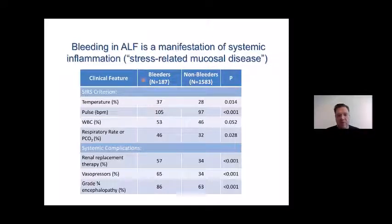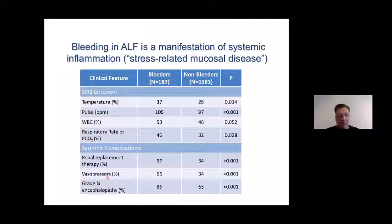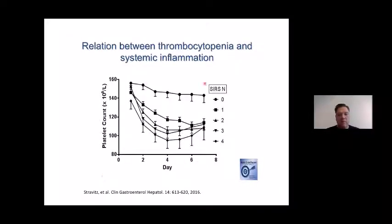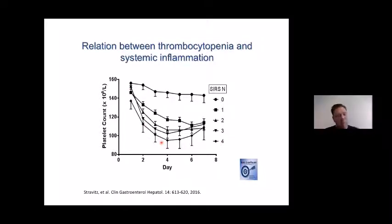These types of bleeds have been coined in the literature as stress-related mucosal disease. Indeed, comparing bleeders versus non-bleeders in the study of more than 1,700 patients, the bleeders have much more positive criteria of systemic inflammation — much more positive SIRS criteria and systemic complications, including renal replacement therapy, severe encephalopathy, and need for pressors. There is also a link established in ALF between platelet count and systemic inflammation: with increasing systemic inflammation, platelet count drops further. The lower platelet count in the bleeders might simply be a reflection of systemic inflammation, rather than the low platelet count actually causing the bleed.